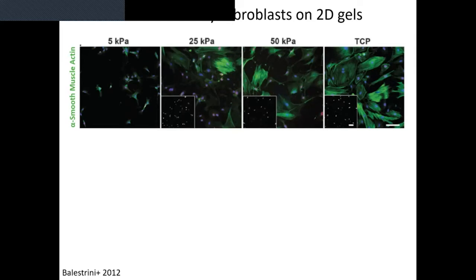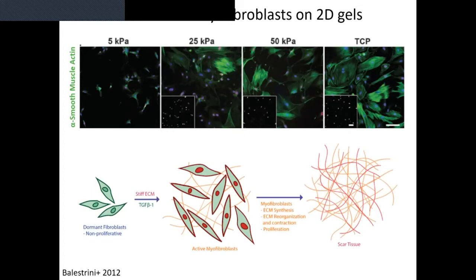As we go from soft to stiff matrix reflecting healthy versus fibrotic lung stiffnesses, we see an increase in activation of myofibroblasts as marked by alpha smooth muscle actin. This has led to understanding why fibrosis is such a progressive disease — why after a certain point the disease continues even after the injury is removed. Once an initial population of myofibroblasts differentiates, these cells contract and synthesize more matrix, stiffening the extracellular space and providing a signal that reinforces further myofibroblast activation. This becomes a self-propagating disease.